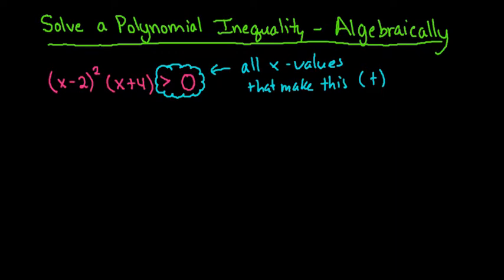For this, the way that you start is the first thing that you do is you find the zeros. The zeros are just the values that make this zero, the crossing points, the turning points, where it crosses the x-axis. It's already in factored form, so it's really easy to find the zeros.